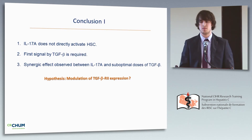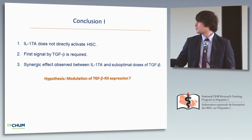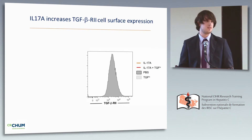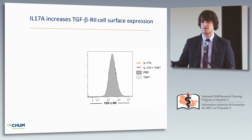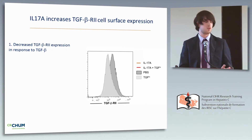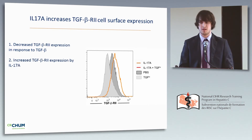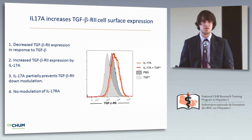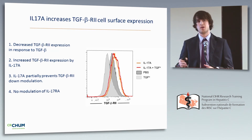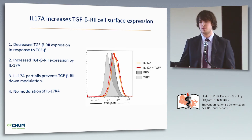We hypothesized this could be due to modulation of the TGF-beta receptor. In our flow cytometry experiment, dark gray shows expression in quiescent hepatic stellate cells. TGF-beta stimulation caused a decrease in receptor expression — a negative feedback mechanism. Interestingly, IL-17A stimulation caused an increase in TGF-beta receptor cell surface expression. Furthermore, IL-17A prevented the TGF-beta-induced decrease in receptor expression, meaning cells could respond to TGF-beta for a longer period. No significant modulation of the IL-17 receptor was observed upon cytokine stimulation.